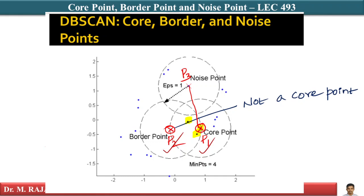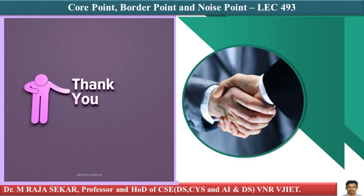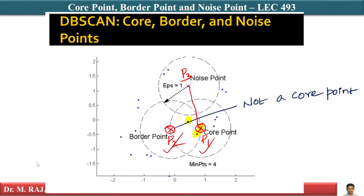Now for point p3, if I draw a circle around it, it has only two points within the epsilon radius. Two is less than min_points of four, so it is not a core point. And the distance between p3 and the nearest core point is more than epsilon, so p3 is not in the neighborhood of any core point. Therefore p3 is a noise point.